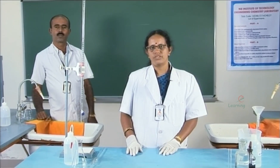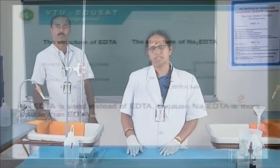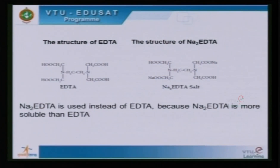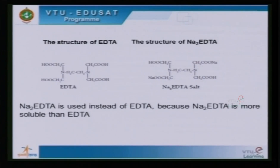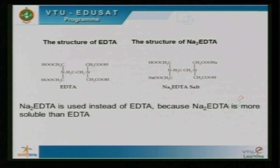The structure of EDTA is the derivative of diethylamine containing four acetic acid groups. However, EDTA as such is less soluble in water. Therefore, the disodium salt of EDTA is used for the estimation, where the two hydrogens of EDTA are replaced by sodium.